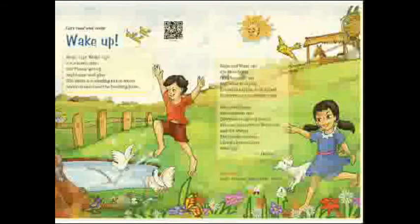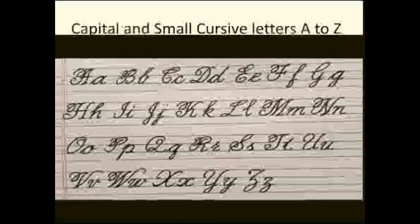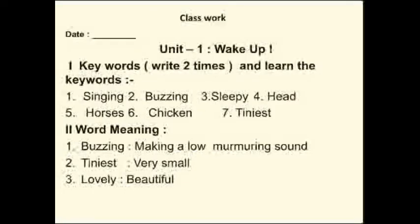Hope children you understood the poem. Now let's move to the written work. You have to purchase a 4-line notebook of 200 pages. On the very first page write A to Z in capital and small letters. On the second page write capital and small cursive letters A to Z. From the third page we start the textbook lesson — write the date, unit number, and lesson name. The first section is keywords, which you have to write 2 times and also learn them.